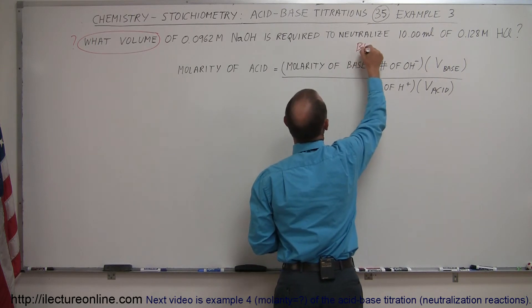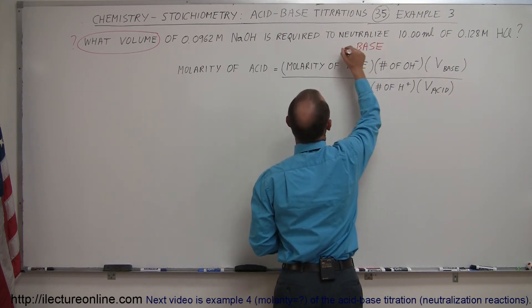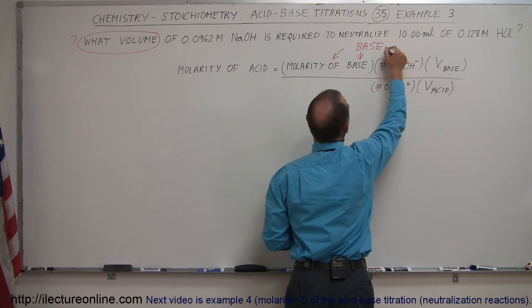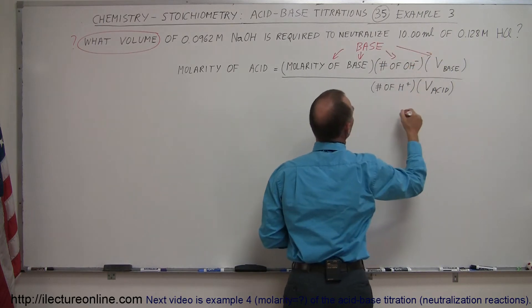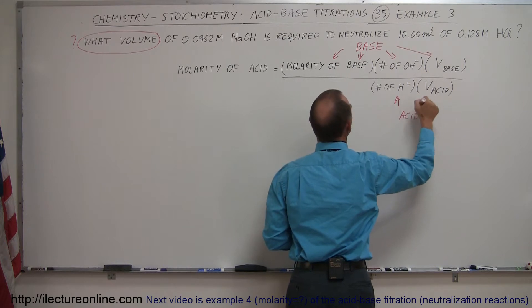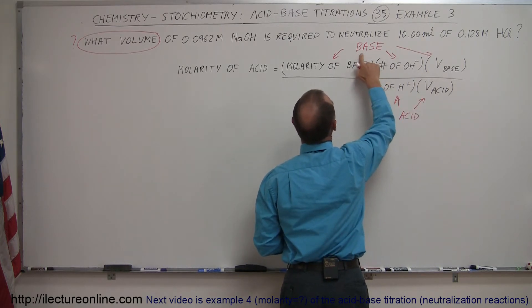So the information about the base is in the numerator and the information about the acid is in the denominator. Okay, I think I have one too many arrows there.